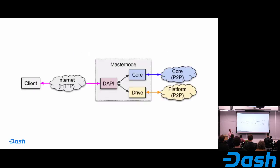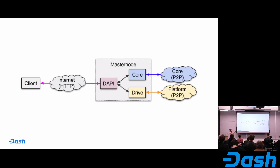Here is a high-level overview of how the platform works — this has been pretty dramatically simplified, and two platform developers will go into greater depth later. Essentially, you'll have some sort of client application — which could be Dashpay or a reference app — and you connect to the Dash network through an HTTP API, which is DAPI. Through that, you can communicate with Core or with Drive, which is the decentralized storage component. Anything you want to save to the platform will be propagated around the network through a peer-to-peer network, similar to how Core transactions are propagated.